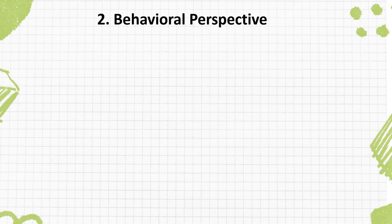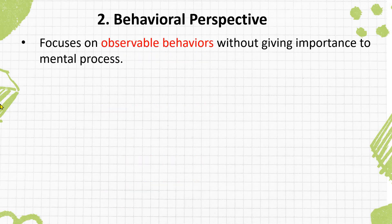Let's go into another perspective: the behavioral perspective. It focuses on observable behavior. We can explain overt and covert actions and behaviors. For example, if someone is nervous, you can see it in the face — that is the overt facial expression — but covert behaviors you cannot see, as they occur in the mental process. This is the behavioral perspective.